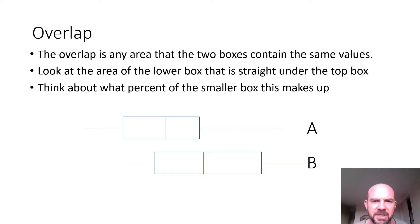So let's have a look. Think about what percent of the smaller box, which is the smaller box? I would say that A is the smaller box. So if I get rid of that, I can click on here. So that there is the overlap.